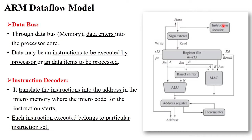Next is the instruction decoder. As we know, each hardware or assembly programming language starts with a particular address — like start 0000H, which is your starting point. So whatever instruction is sent by the data bus, this instruction is translated into a particular starting address — that is the work of the instruction decoder. Each instruction belongs to a particular instruction set. There are different instruction sets in the ARM processor: arithmetic instructions, condition instructions, opcode instructions, and so on. The instruction decoder decodes the instruction and points to the particular starting address.